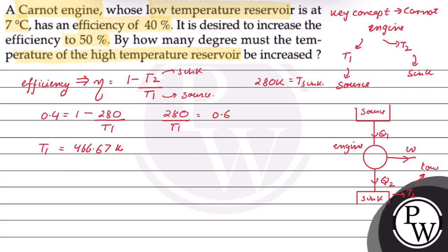Now it is desired to increase the efficiency to 50%, so the new efficiency is 0.5 is equals to 1 minus, since sink का temperature same है इसलिए 280 upon temperature of the high temperature reservoir is changed. So उसका temperature 466.67 plus T' है.